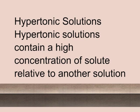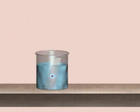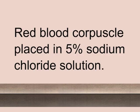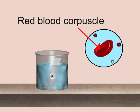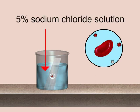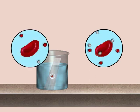Based on osmotic pressure, solutions are of three types. Hypertonic solutions contain a high concentration of solute relative to another solution. One example is red blood corpuscles placed in 5% sodium chloride solution. When a red blood corpuscle is placed in a hypertonic solution, water comes out of the cell and the cell shrinks.